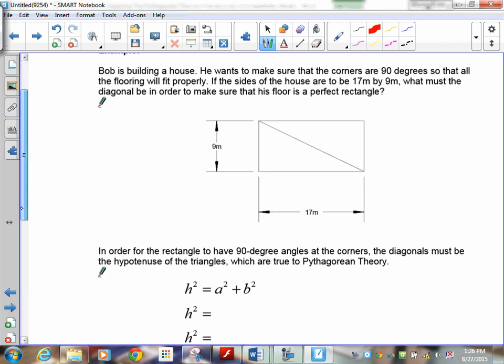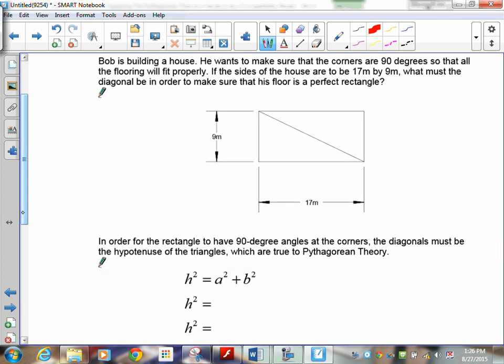Let's take a look at another example here. Now, this one is not one where we're going to be doing a test to see if it's actually a right triangle. In this particular one, we're going to actually get you to do an actual calculation. Bob is building a house. He wants to make sure that the corners are 90 degrees so that all the flooring will fit properly. If the size of the house should be 17 meters by 9 meters, what must the diagonal be in order to make sure that his floor is a perfect rectangle? So, I need to find out what this diagonal is.